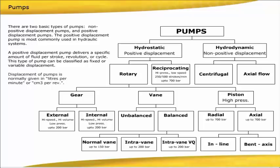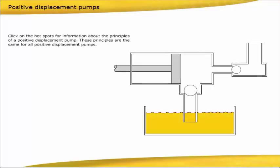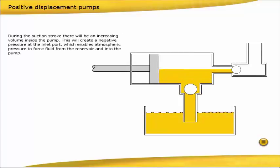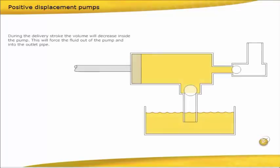Displacement of pumps is normally given in liters per minute or cubic centimeters per revolution. These principles are the same for all positive displacement pumps. During the suction stroke, there will be an increasing volume inside the pump. This will create a negative pressure at the inlet port, which enables atmospheric pressure to force fluid from the reservoir and into the pump. During the delivery stroke, the volume will decrease inside the pump. This will force the fluid out of the pump and into the outlet pipe.